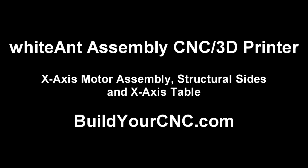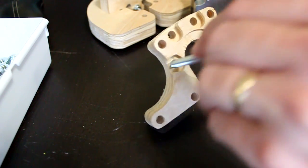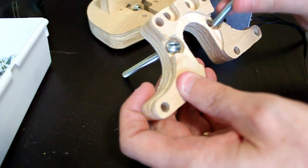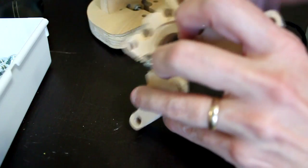In this video we'll be putting the x-axis motor mount and motor onto the machine, fasten the upper structural sides to the lower structural sides, and add the table to the machine.